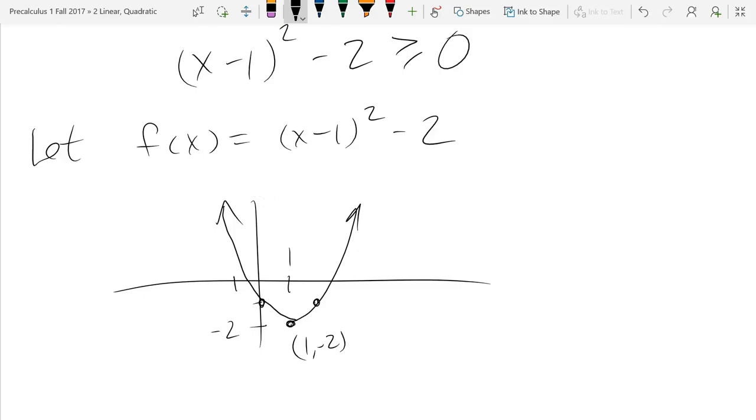Any questions on that graph shifting? We got to go right one, down two, and we got the parabola. I just use the three key points that we always use. There was no stretching, so those points didn't get stretched at all, they just got shifted.